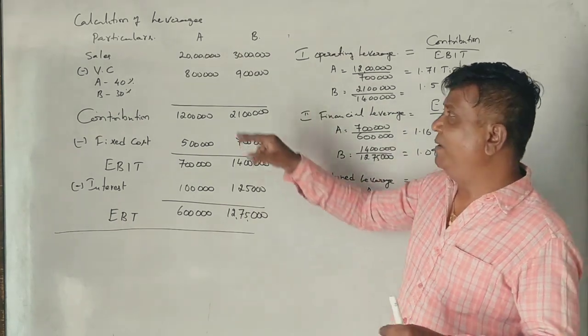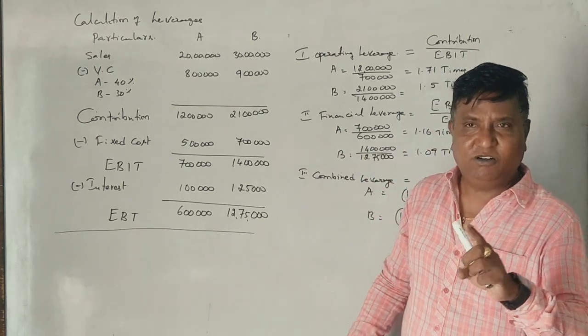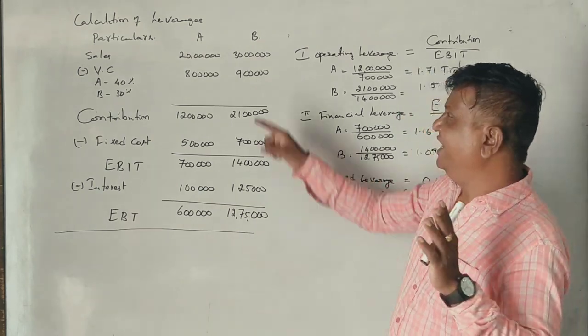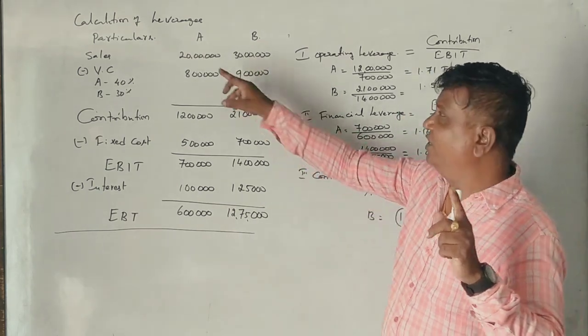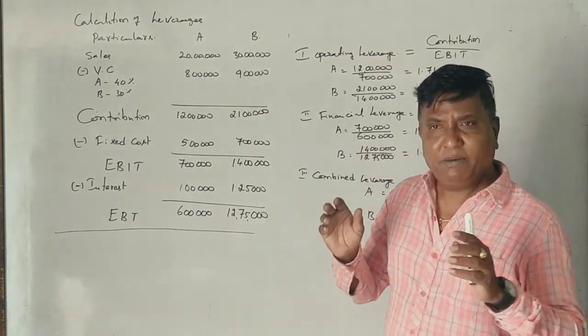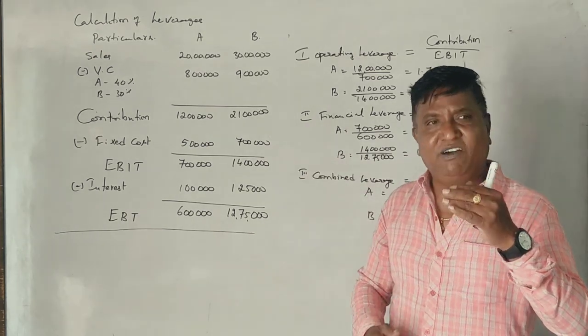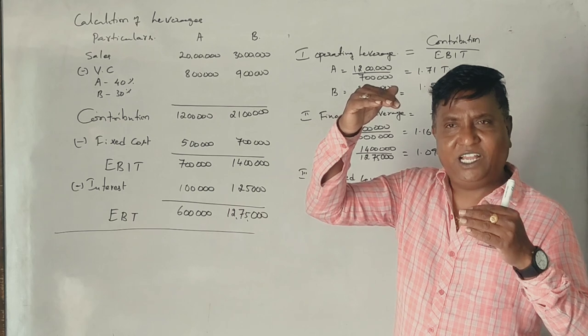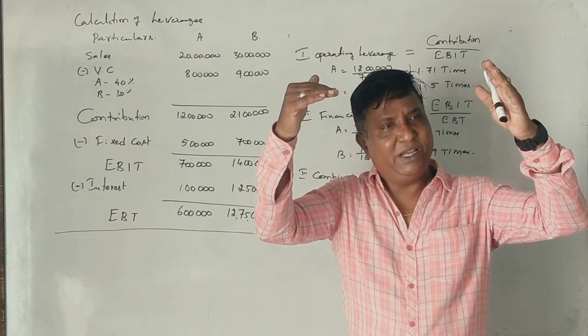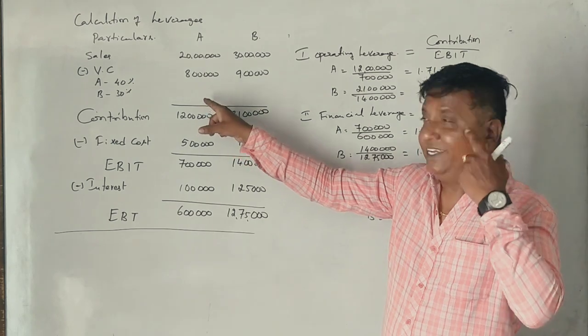But Firm B's EBIT is about 14 lakhs. So even though Firm A has higher contribution percentage, it has lower EBIT. What does this mean?